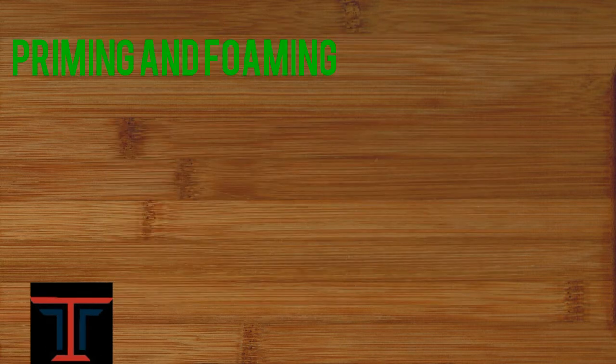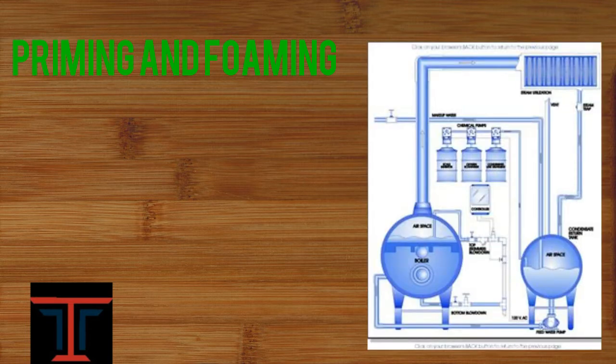Priming and foaming are very important processes that occur in the boiler. Foaming is the formation of bubbles on the surface of water that prevents the formation of steam. It acts like foam on the surface, hence it is called foaming.